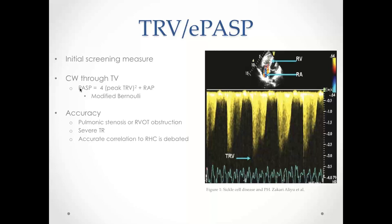There are notable limitations. This method is not reliable when there is pulmonic stenosis or RVOT obstruction, where PA pressures will be overestimated. In the setting of severe TR, you'll have underestimation of PA pressure, likely because you're underestimating right atrial pressure via IVC assessment (maximum estimate is 15), or because early equalization of RV and RA pressures reduces the pressure gradient and the measured velocity.